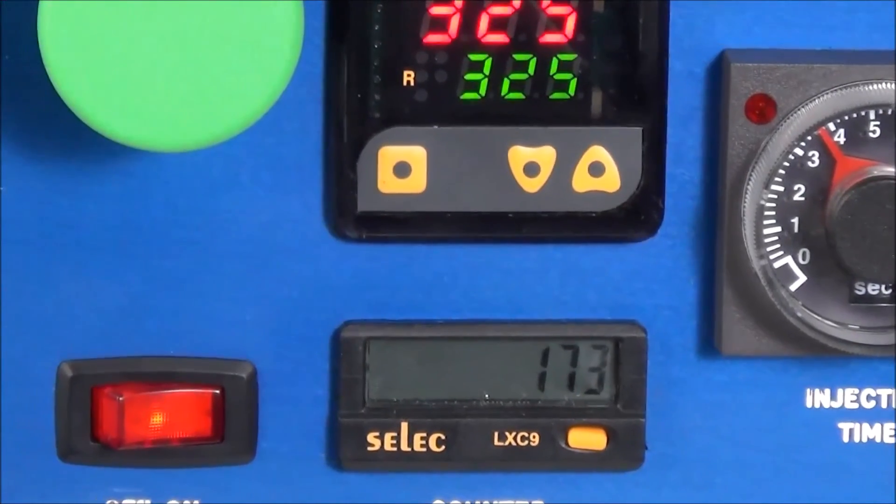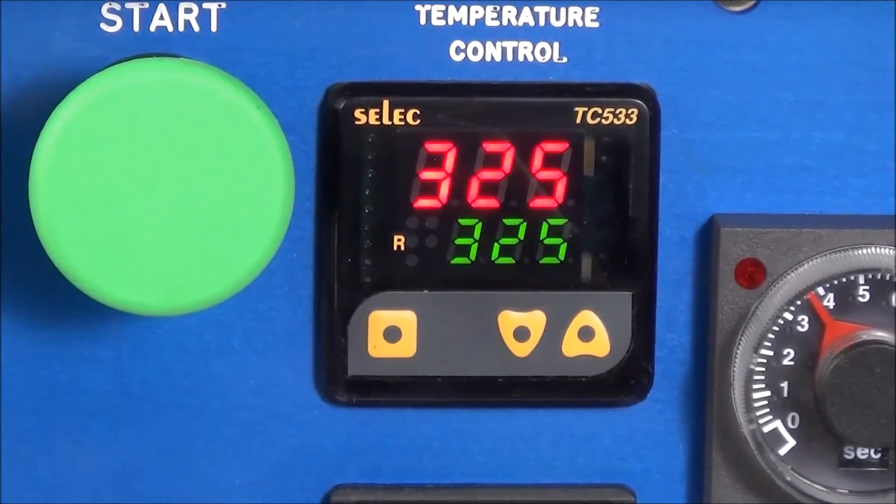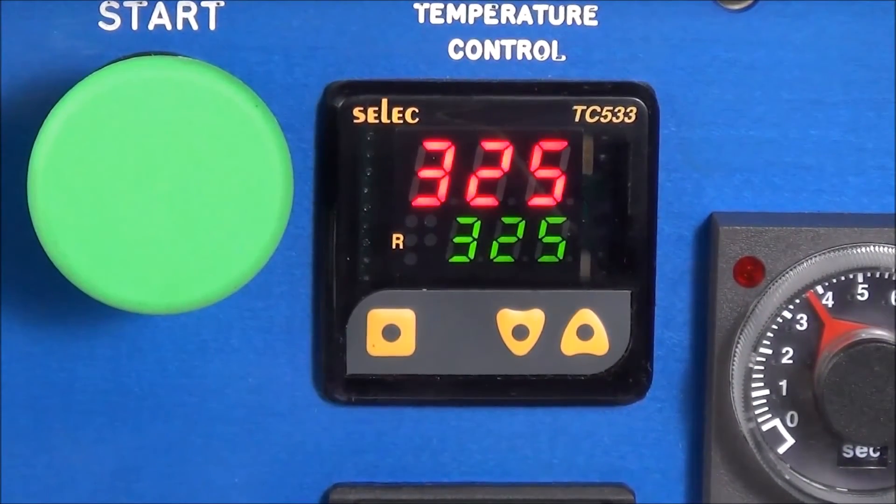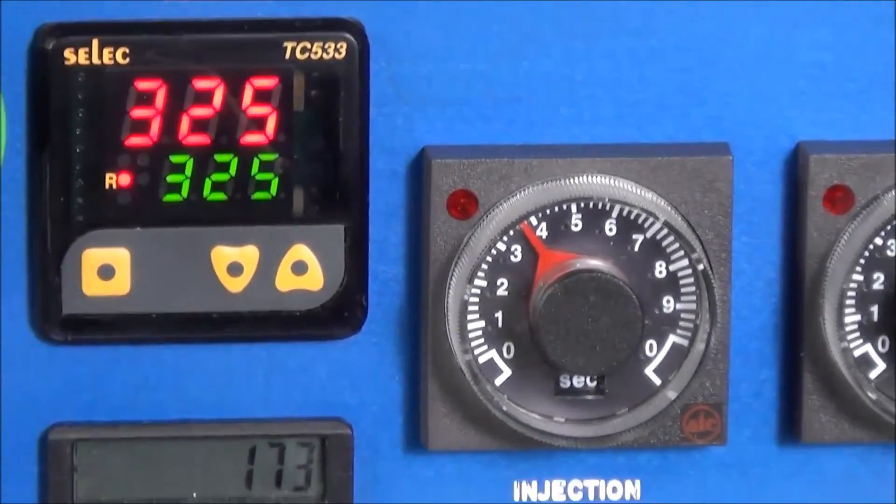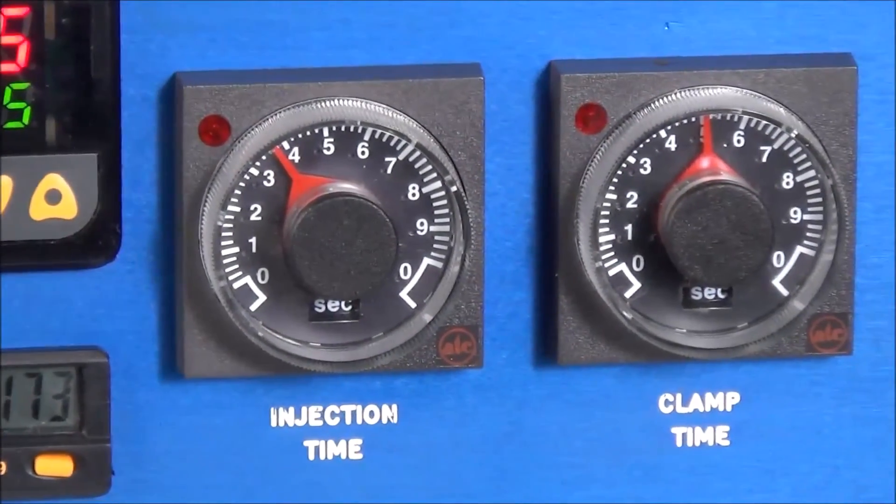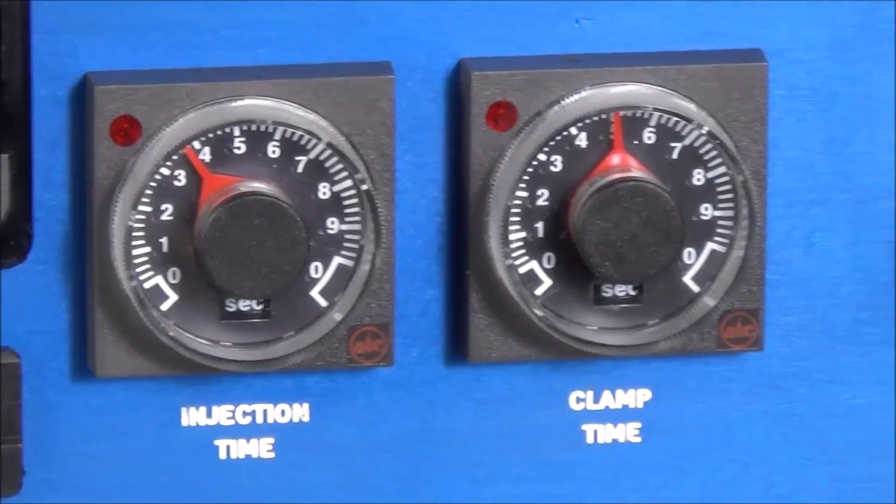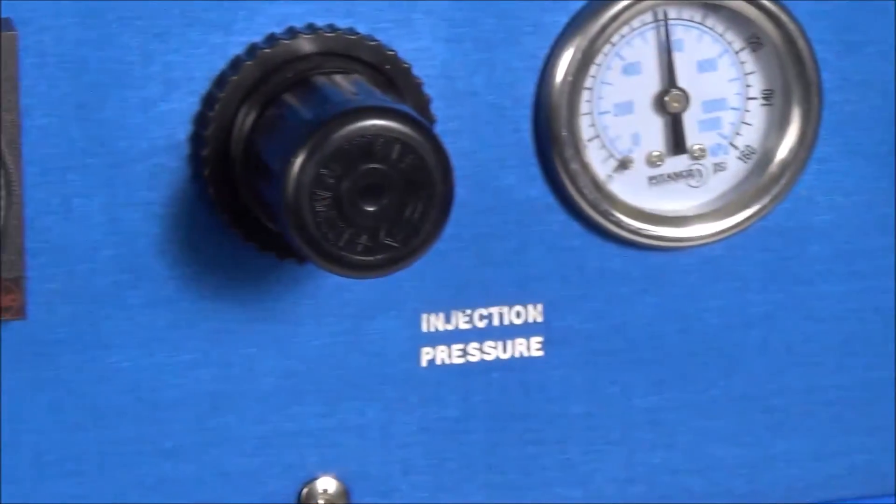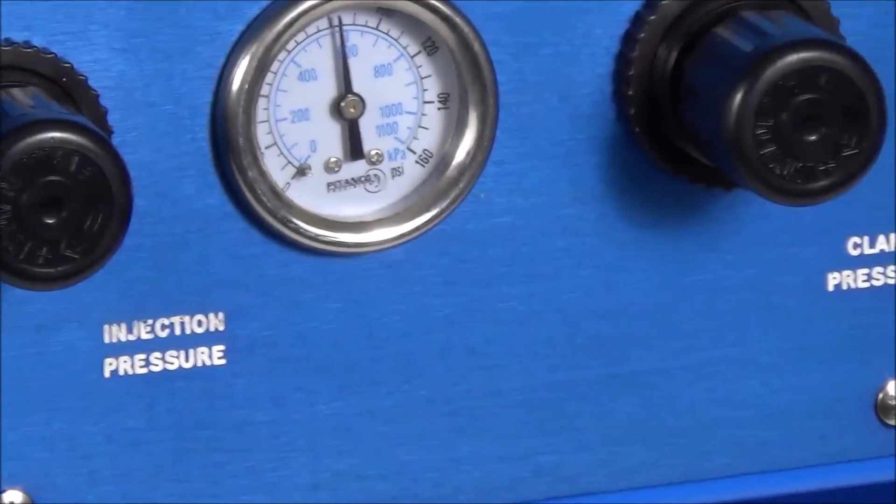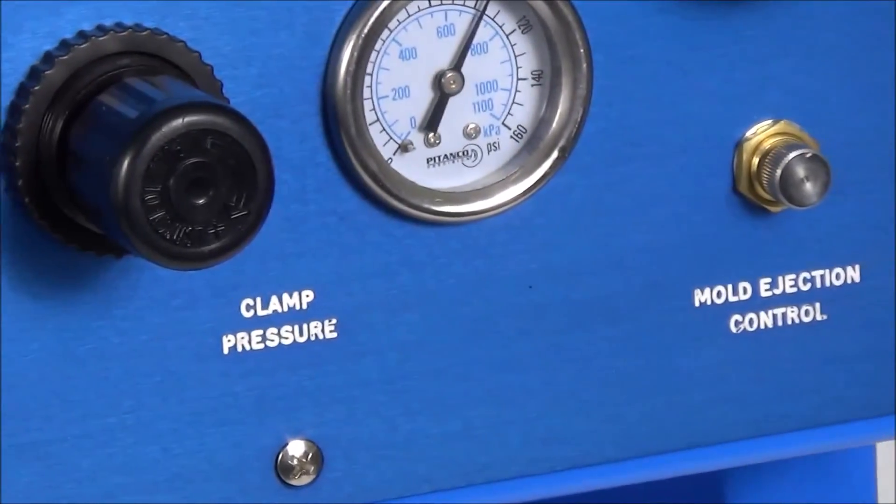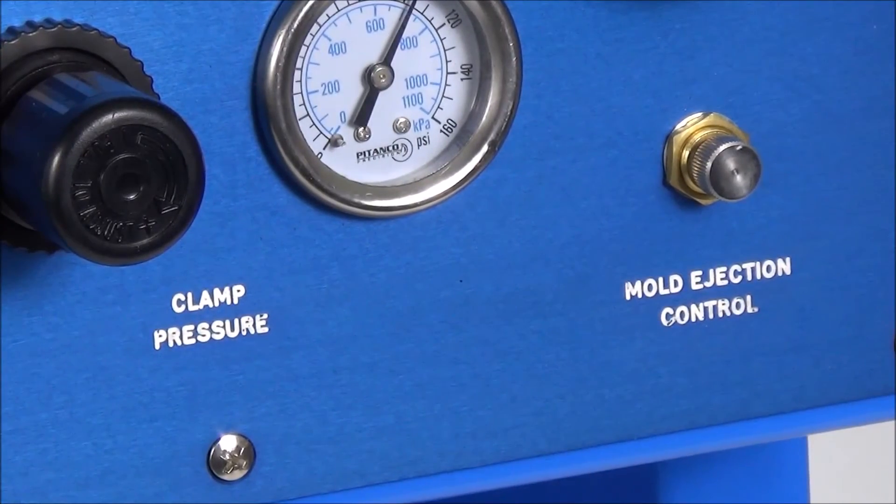The programmable temperature controller is located on the left side of the control panel. The injection time and clamp time controllers are located towards the left side of the control panel. The injection pressure and clamp pressure controls are located to the right of the control panel. And the smaller knob below the right activation button controls the mold ejection force.